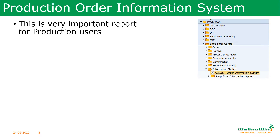The first report is COOIS. This is a very important report for production users, having multiple information about the production execution. And also if you want to see some details related to production planning, we can see here.